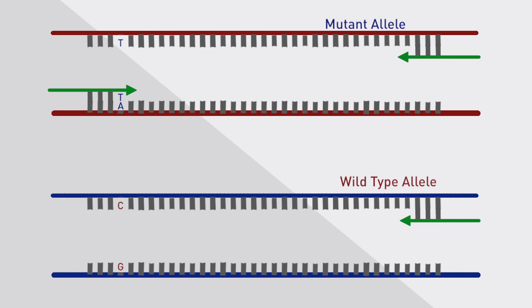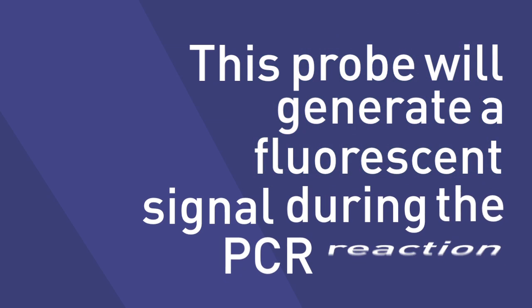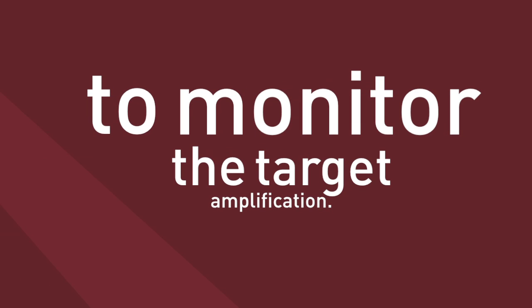A locus-specific TaqMan probe is designed to bind to the target gene between the primers. This will also bind to both mutant and wild-type allele-containing DNA. This probe will generate a fluorescent signal during the PCR reaction to monitor the target amplification.